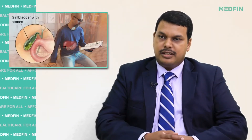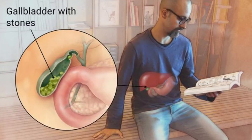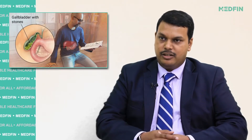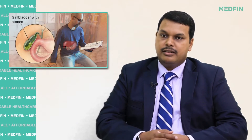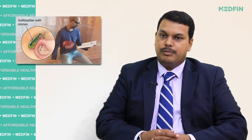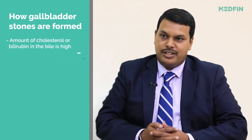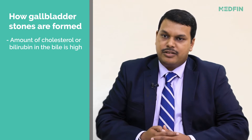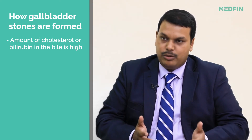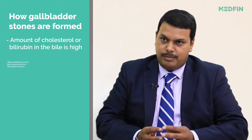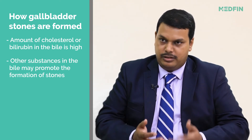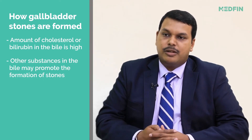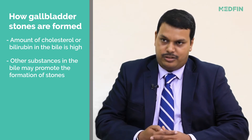Gallbladder stones are small stones which are formed within the cavity of the gallbladder. The person may have various reasons as to why gallbladder stones are formed. The first and foremost reason is the concentration of cholesterol in the bile. When the concentration of cholesterol goes above a certain level, it tends to clump together and therefore forms a stone. The most common stones found in our country are cholesterol stones.